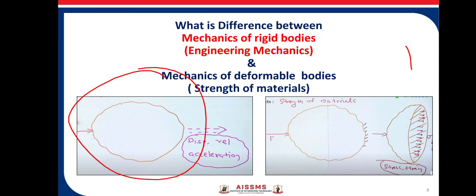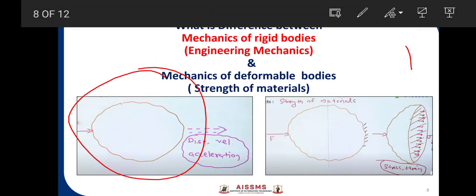For example, if a force is applied on this beam and it is supported so it does not move, it will be in equilibrium. If we study the internal forces due to application of that external force, some stresses and strains are introduced in the body — this comes under the category of strength of material. Engineering mechanics and strength of material study the same type of body under the same external forces; the difference is that engineering mechanics is concerned with external effects.